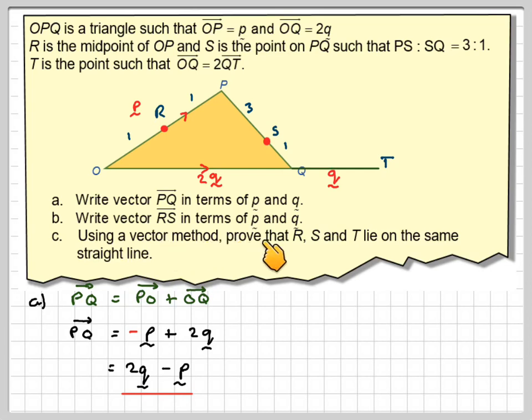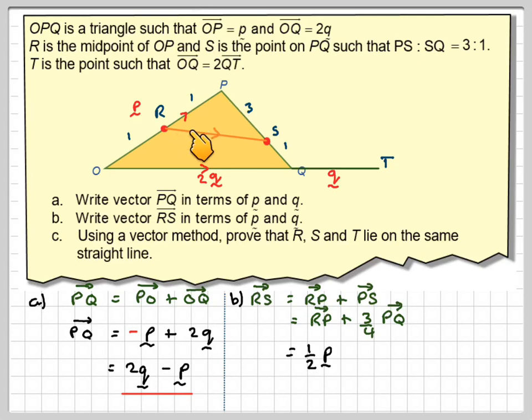Write the vector RS in terms of p and q. So we'll draw on RS. So RS will be the same as going RP plus PS, which is the same as going RP. Now, PS is 3 quarters, because this is the ratio of 3 to 1, of vector PQ, which we've just found. So that will be equal to, now, this is going to be a half of p, because it's half the distance, plus 3 quarters of 2q minus p.